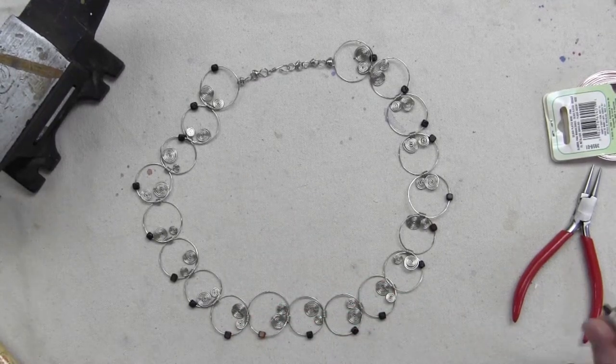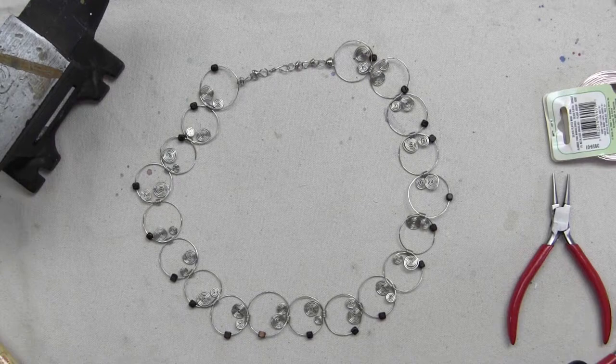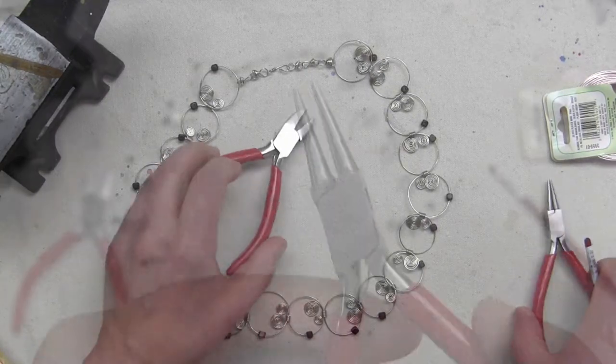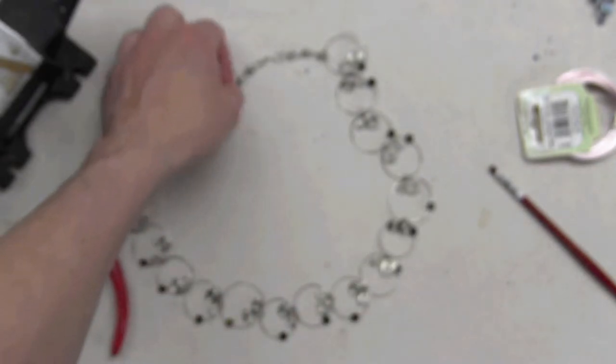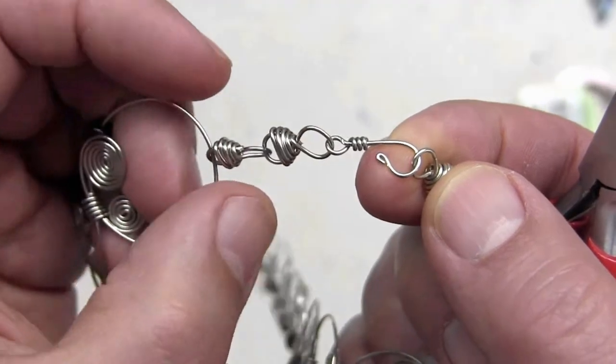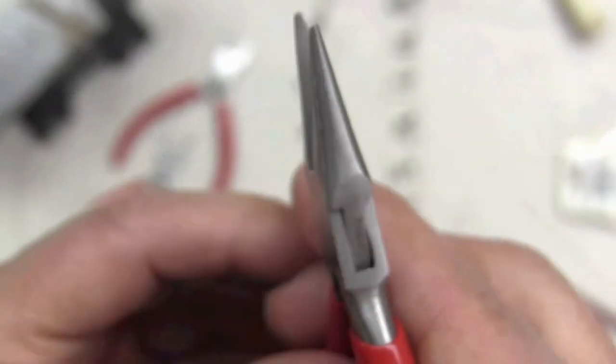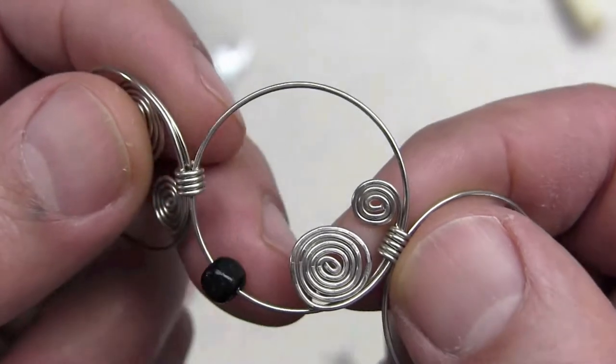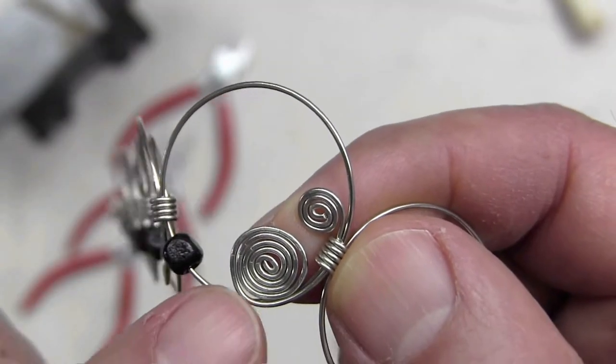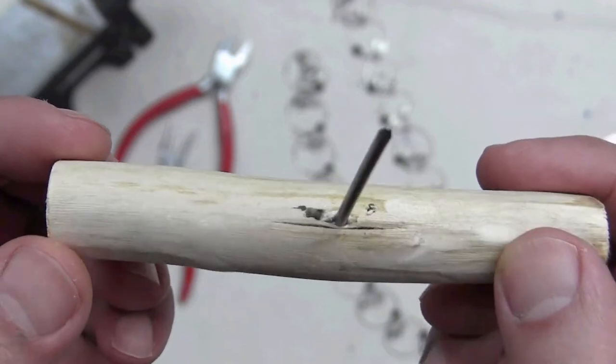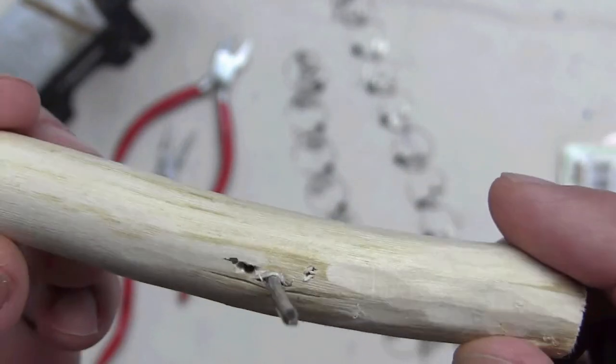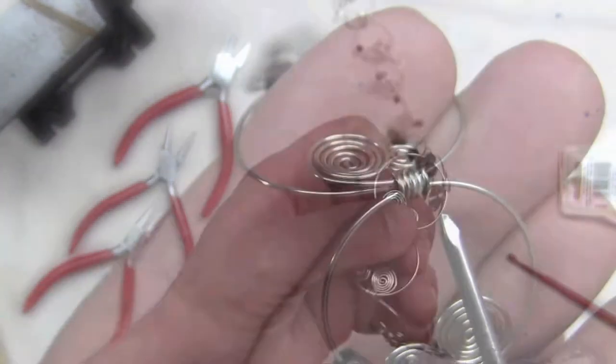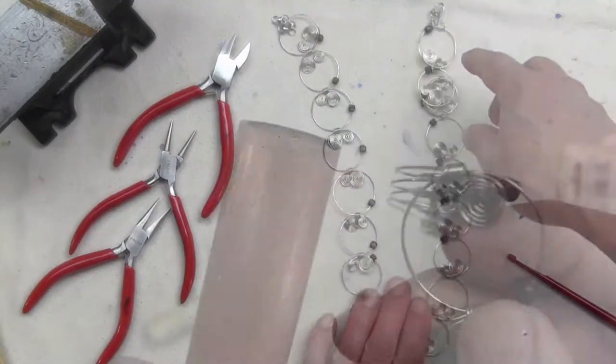To construct this necklace, you're going to need to use a variety of tools. And they include a pair of side cutters, round nose jewelry pliers. That will be used to construct the clasp and figure eight. Your flat nose pliers. Your flat nose pliers will be used for the main work, especially the formation of the spirals. Our handmade tool. If you've watched my other videos, you've seen me use this for the formation of the coils.